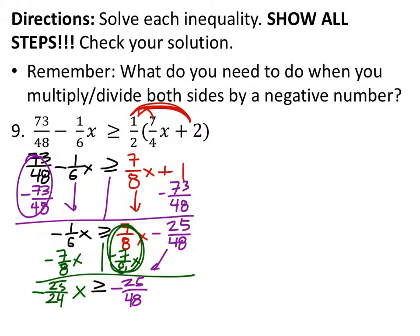The final step in this inequality would be to take that negative twenty-five-twenty-fourths and divide it on both sides of the inequality. And what this does is it makes it a one-x, which is what we want. And over here we'll divide the same, divide it by negative twenty-five-twenty-fourths.